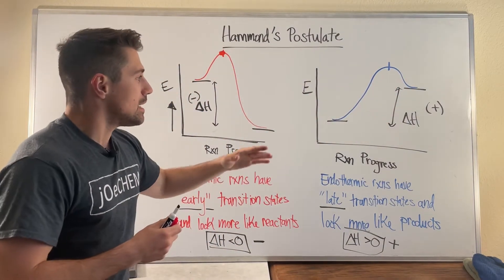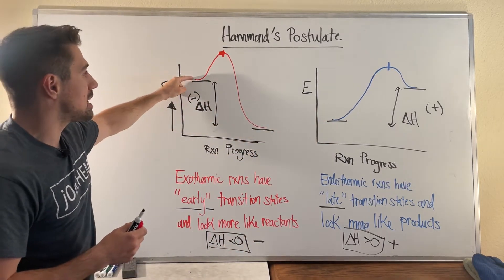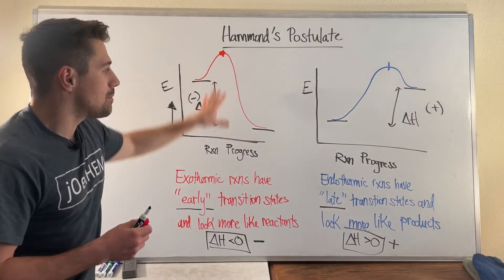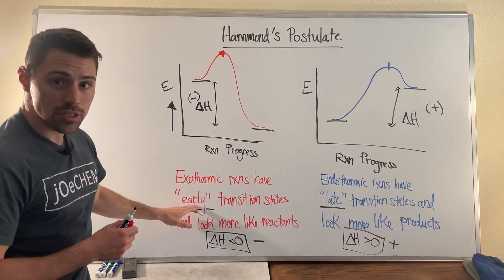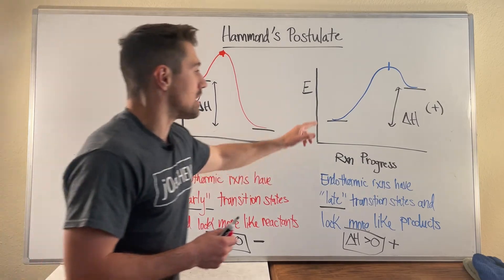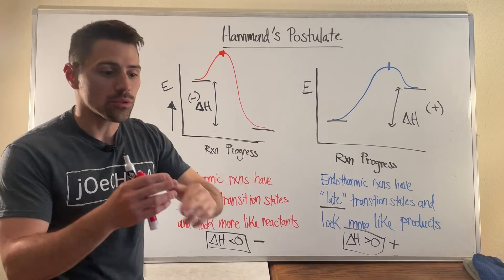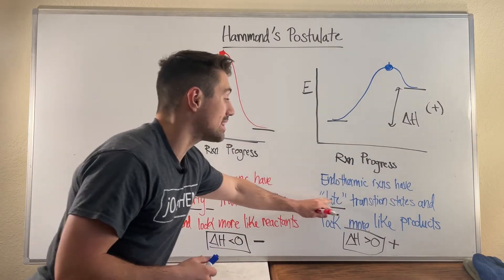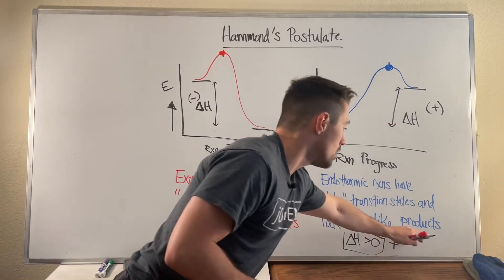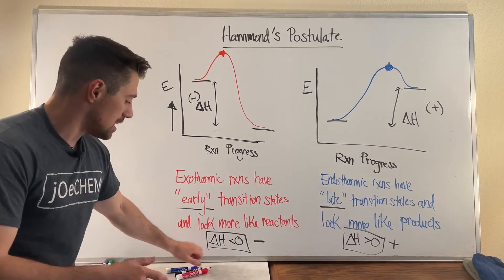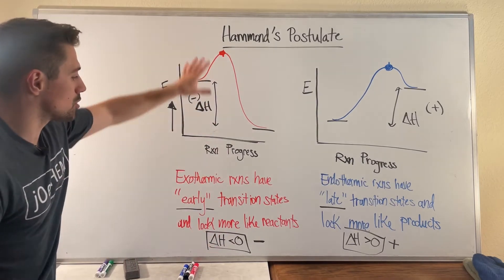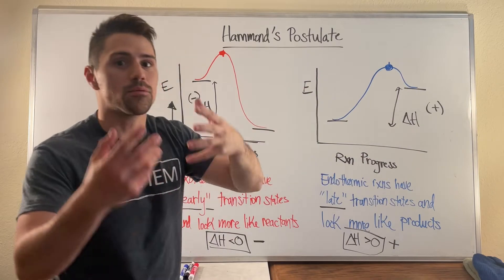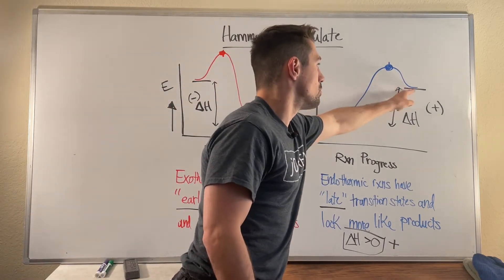Whereas for the exothermic reaction the transition state happens really close to the reactants, you can see the opposite is true here — the transition state is closer to the products. So Hammond's postulate says exothermic reactions have early transition states and look like reactants, while the opposite is true for endothermic reactions. They take a little bit more time to get to the transition state, to fully start breaking and forming bonds. Hammond's postulate states you will have a late transition state, meaning you're closer to the finish of your reaction and you will look more like products.